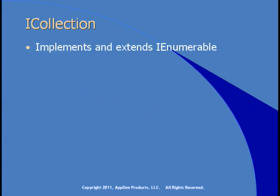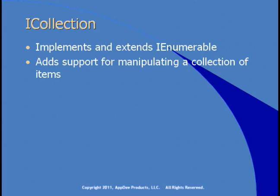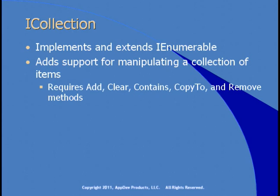The ICollection interface extends IEnumerable and adds support for manipulating a collection of items. Just because something implements IEnumerable doesn't mean it works as a collection — it's just something you can iterate through. Something that implements ICollection is enumerable and supports manipulating items. This interface requires a class to have add, clear, contains, copyTo, and remove methods — add an item, clear all items, check if an item is in the collection, copy the collection to an array, and remove an item.